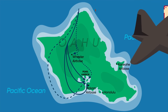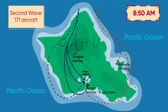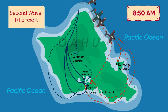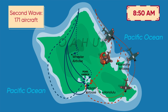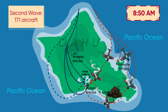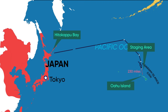At around 8:50 am, the second wave of the Japanese, including 171 aircraft, began. But this time it had to deal with a much more coordinated defensive response. Nonetheless, the US base was still subjected to savage damage. At 10 o'clock am, the Japanese planes headed back to carriers and ultimately back to Japan.